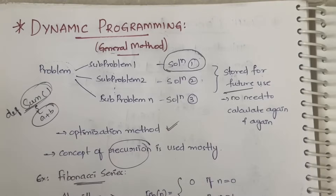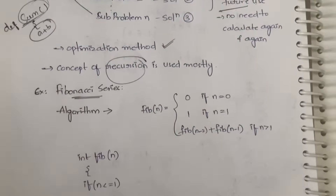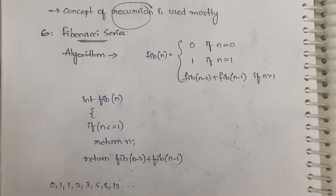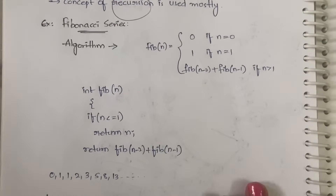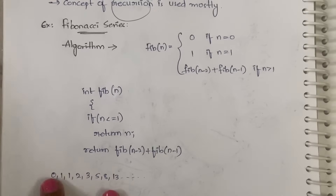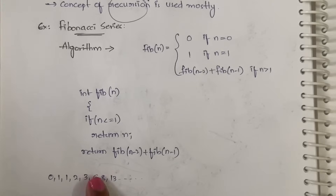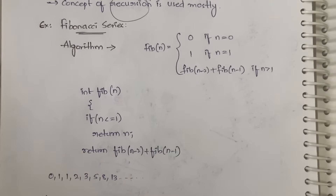Now let us understand this with an example. You all know what the Fibonacci series is: you start with 0, then 1. 0 plus 1 gives 1, 1 plus 1 gives 2, 2 plus 1 gives 3, 3 plus 2 gives 5, 5 plus 3 gives 8 — like this, you add the previous two terms to get the next term.